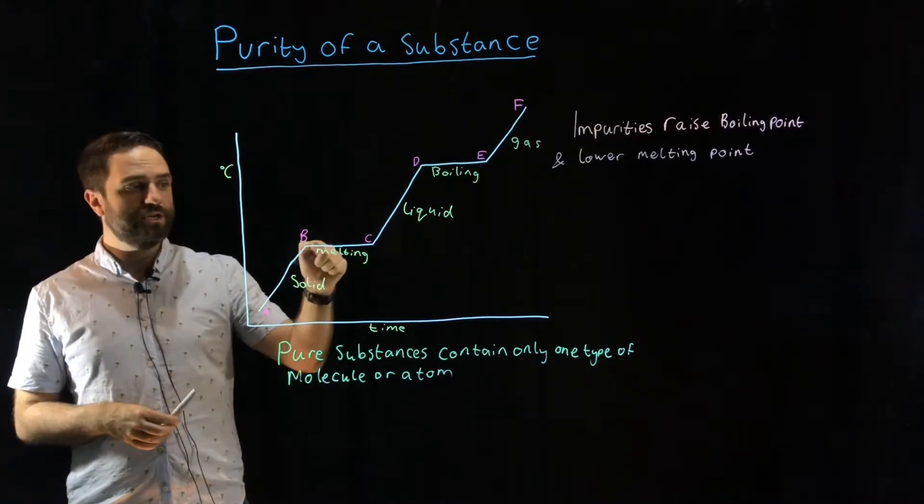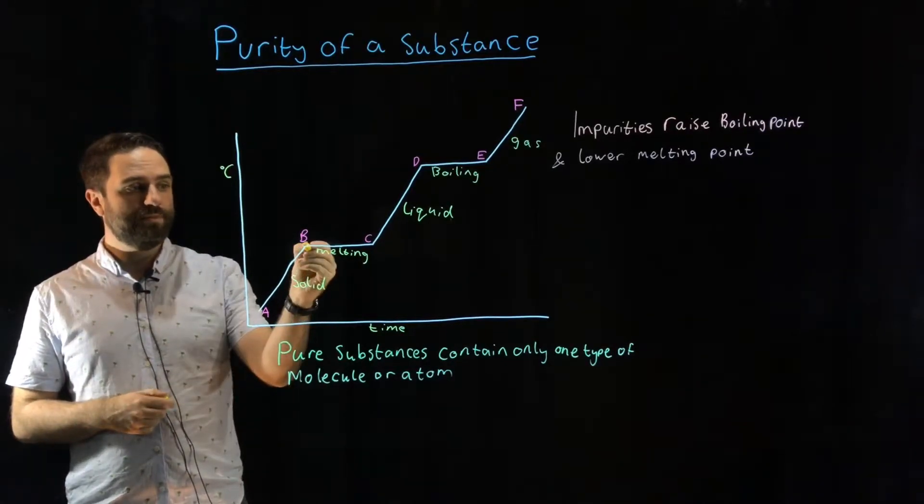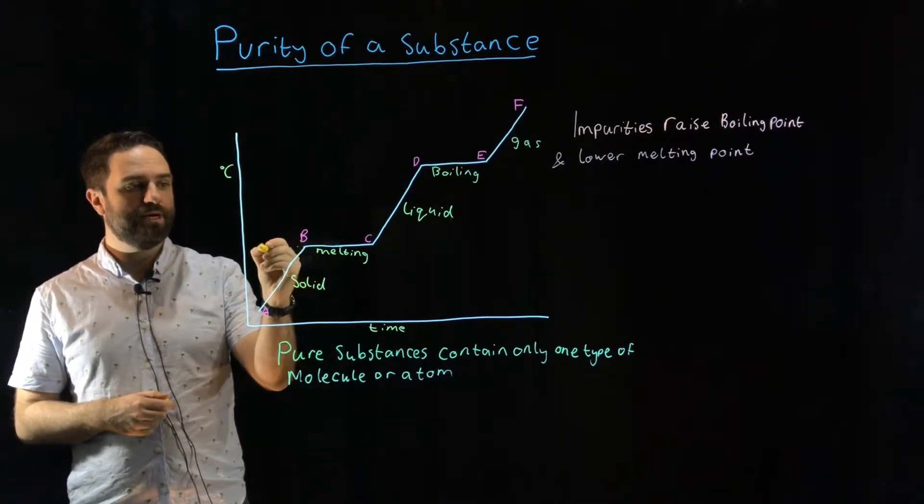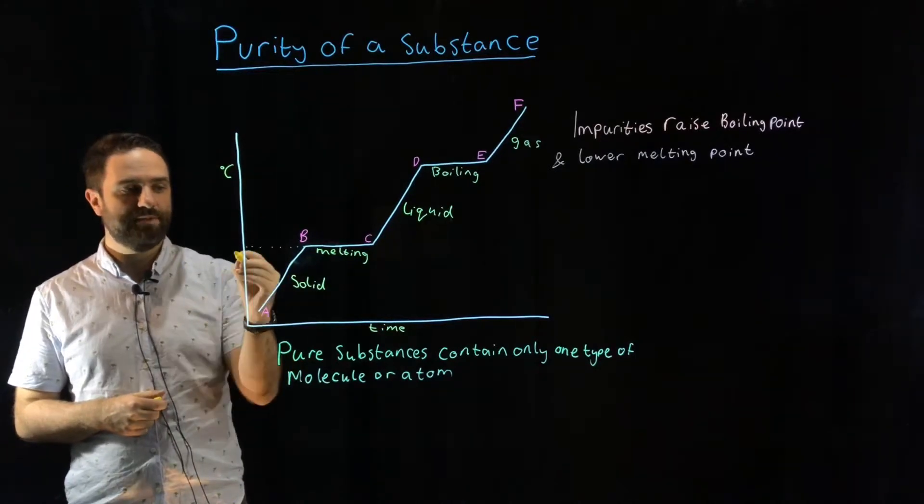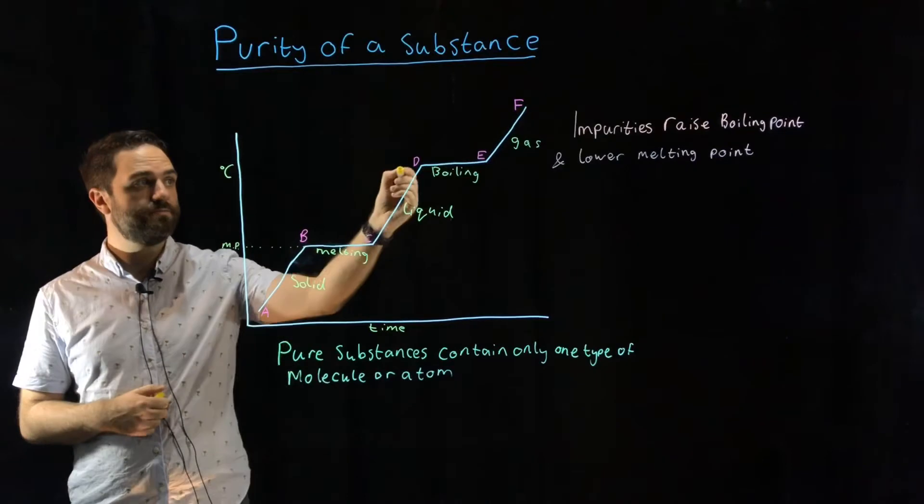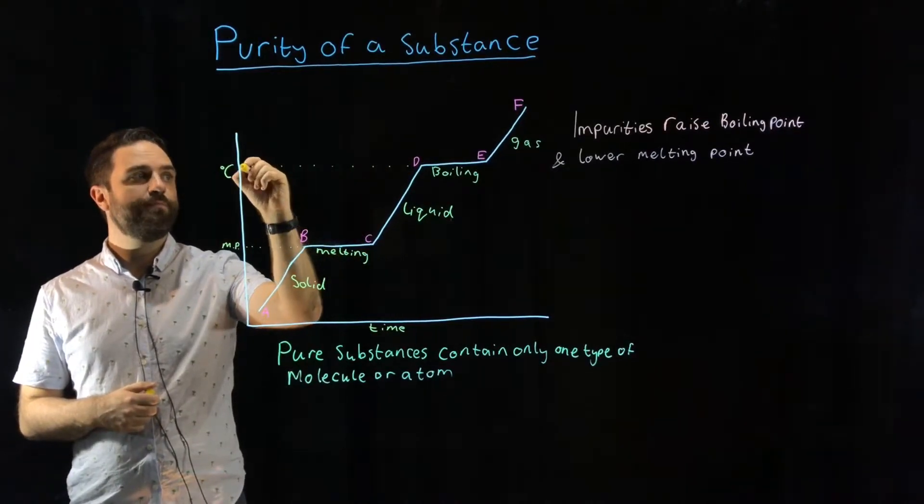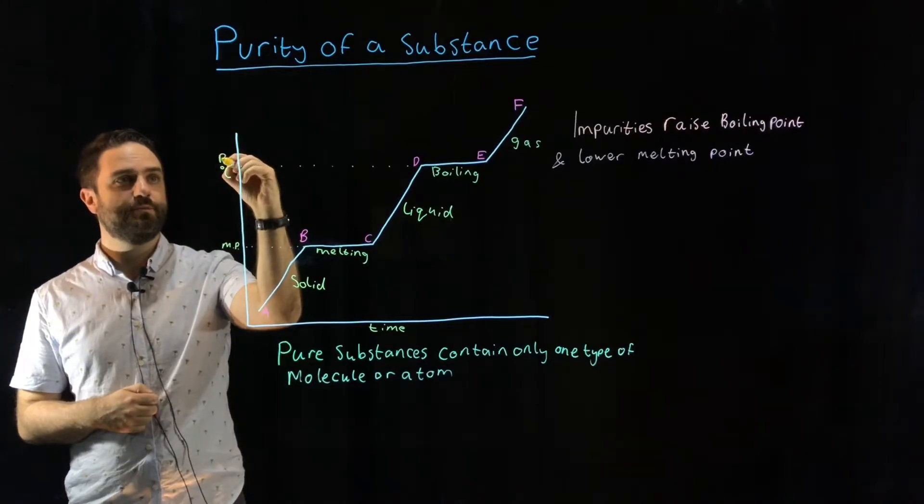But, we can use graphs like this to determine melting and boiling point. All you do is draw a nice line from the melting point to this axis here, and this will be the temperature at which the substance melts. Same goes for the boiling point. This will be the boiling point.